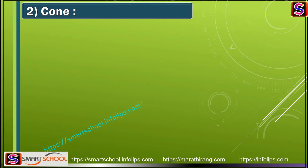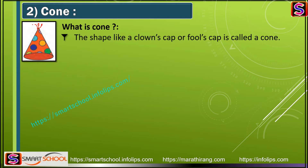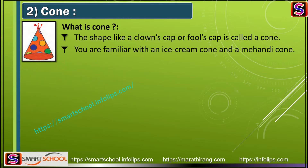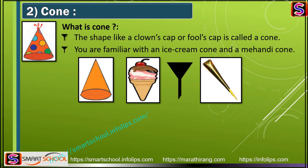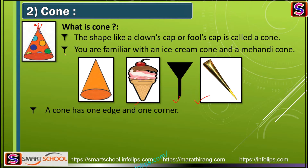The next shape is a cone. The cone shape is like a clown cap - the type of cap a joker wears in the circus. It is also like an ice cream cone. Other examples of cone shapes include a conical flask used in a science lab.